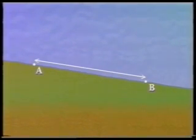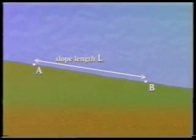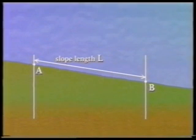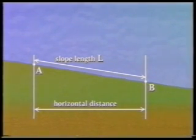Two ground points A and B lie on a constant slope. The distance along the slope between A and B is known as the slope length or the slant length, and is usually given the symbol L. If vertical planes are added through A and B, then the shortest distance between them lies at right angles to these two planes. This is known as the horizontal distance and it is usually given the symbol D.